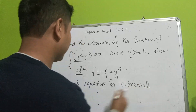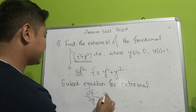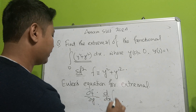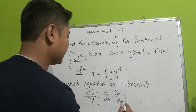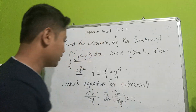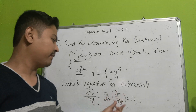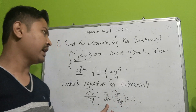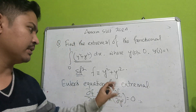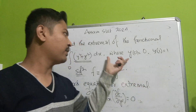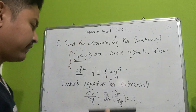Euler's equation for the extremal is: del f by del y minus d/dx of (del f by del y prime) equals zero. Using this formula with the boundary conditions, we can find the extremal curve.